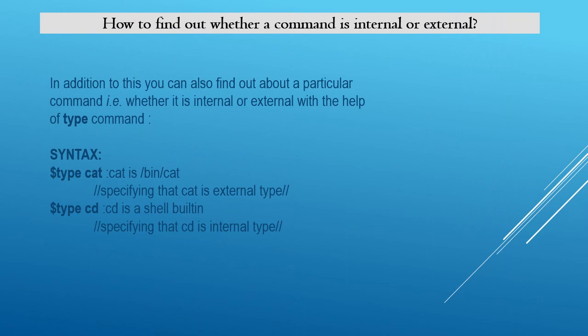Now a question arises: how do you find whether a command is internal or external? Here is the answer. We can find out about a particular command — whether it is internal or external — with the help of the type command. You can see here: type cat and type cd. For type cat, the result is /bin/cat, which specifies that cat is an external command.